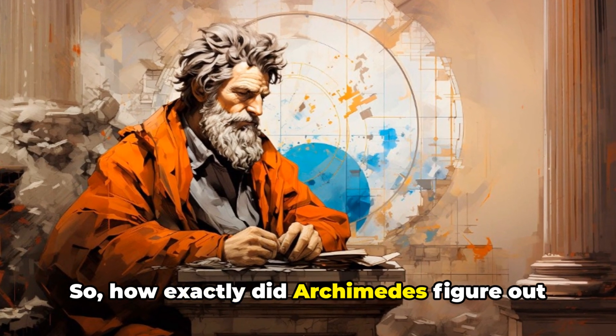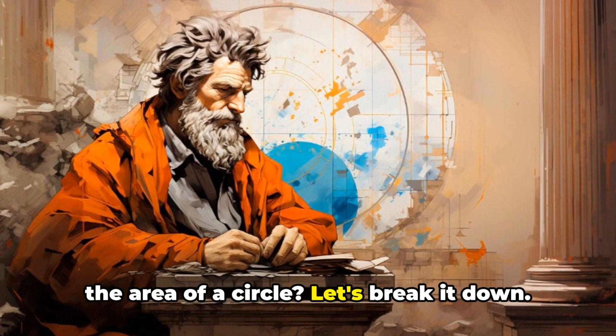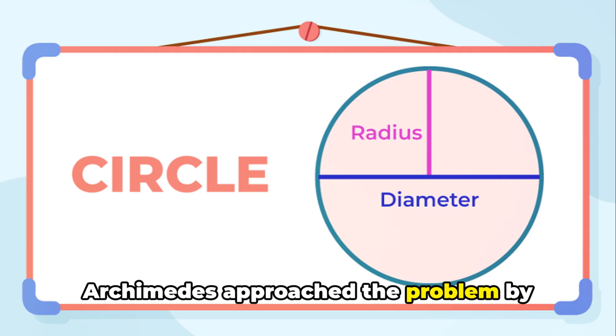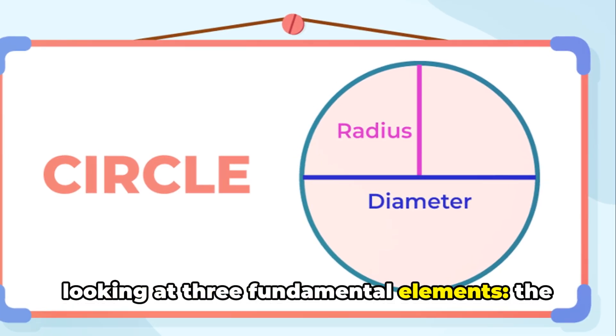So, how exactly did Archimedes figure out the area of a circle? Let's break it down. Archimedes approached the problem by looking at three fundamental elements.